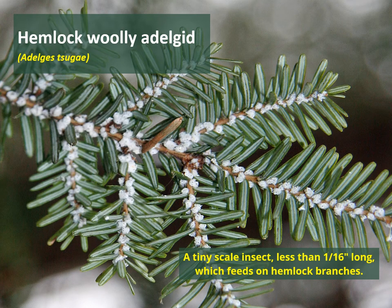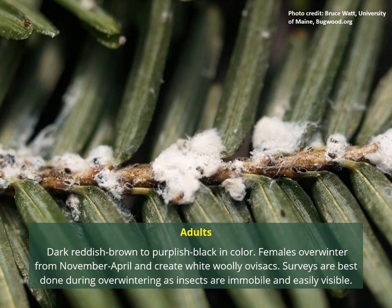Hemlock woolly adelgid is another species of concern — a very small scale insect that feeds on hemlock trees. The adults, which you can see as the little black specks in this photo, are usually a dark reddish brown or purplish black color. In the winter, the females create a white woolly ovisac, which is really what makes the species visible. From November to April they create these ovisacs, and during that time they are not mobile, so surveys are usually done in the winter.